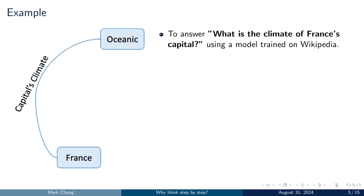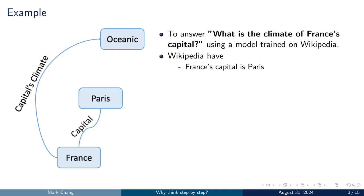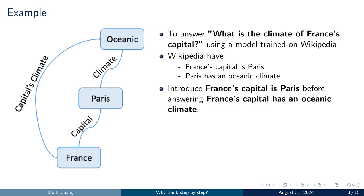Here we present an example. Suppose we want to answer the question, what is the climate of France's capital, using a model trained on Wikipedia. Although Wikipedia doesn't contain a sentence explicitly stating the climate of France's capital, it does provide sufficient information for the model to infer this. First, the model recognizes that France's capital is Paris. Next, it identifies that Paris has an oceanic climate. During inference, if we first prompt the model to determine that France's capital is Paris before asking it to identify the climate, the model is more likely to arrive at the correct answer.